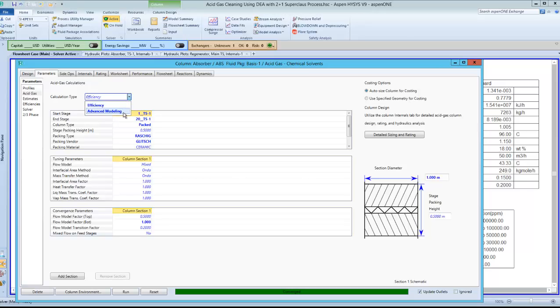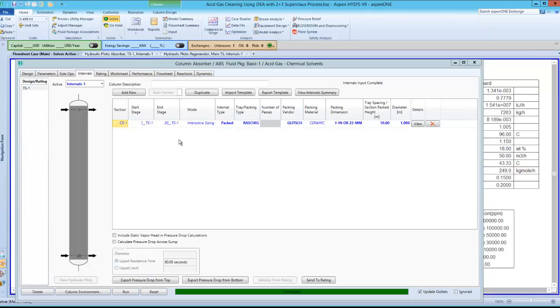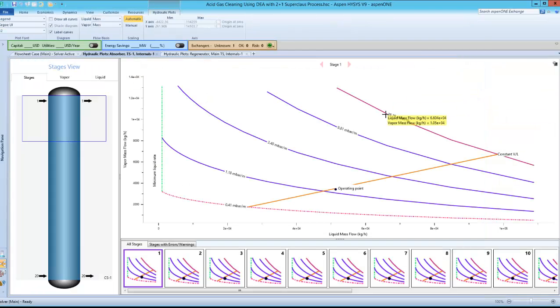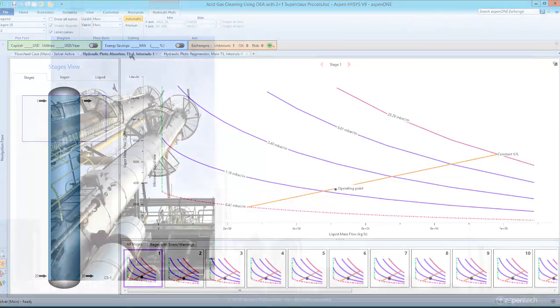The intuitive interface of Aspen Hysys makes the modeling process very simple, and the intelligent defaults generated by the system guide you and save you time. Setting up properties and flow sheets for acid gas cleaning in Aspen Hysys is much simpler and faster.